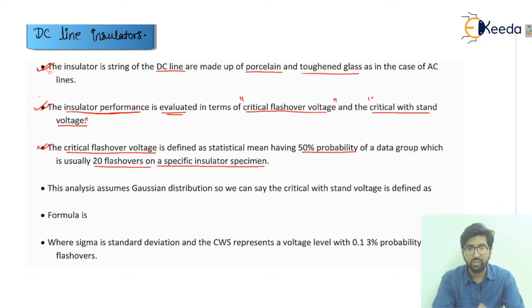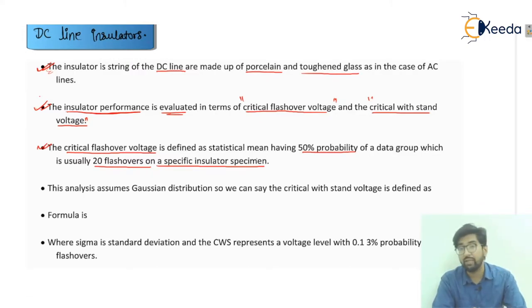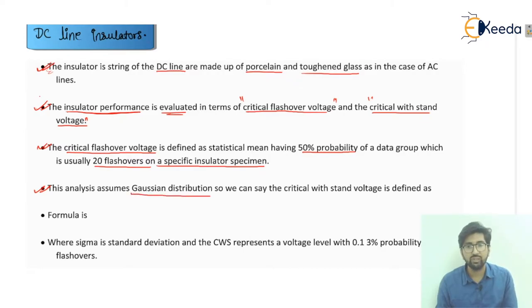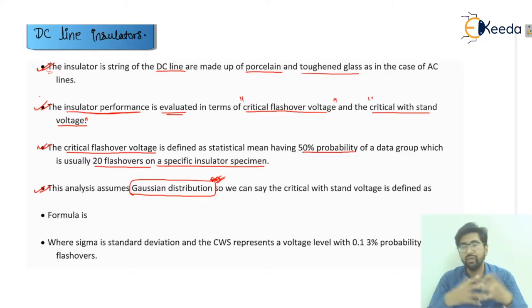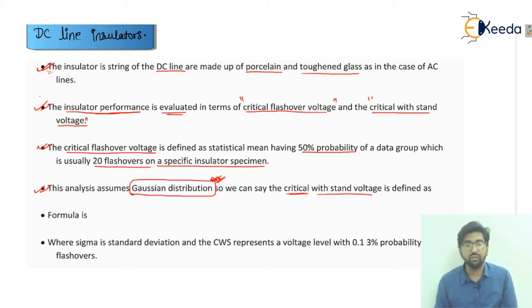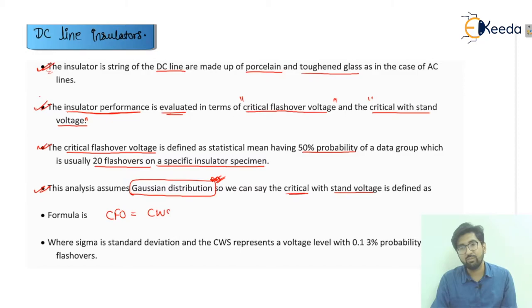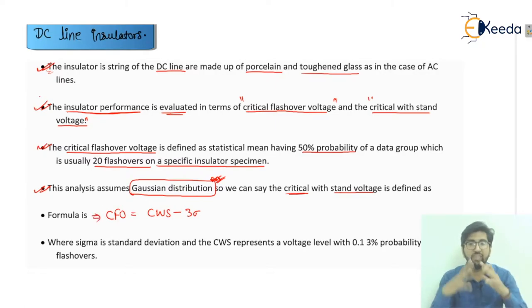The critical flashover voltage is defined as a statistical mean having 50% probability of a data group, which is usually 20 flashovers on a specific insulator specimen. So it is a kind of statistical mean — you are taking the average value — with a 50% probability of a data group. The analysis assumes a Gaussian distribution. Using that, the critical withstand voltage (CWS) formula is: CFO = CWS − 3σ.